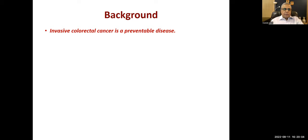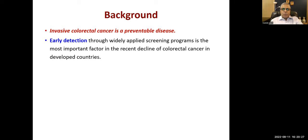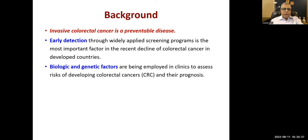Invasive colorectal cancer is a preventable disease. Screening is recommended - one test is occult blood in stools, which detects blood that cannot be seen. Early detection through widely applied screening programs is the most important factor in the recent decline of colorectal cancer. Biologic and genetic factors are being employed to assess risk. For example, familial adenomatous polyposis carries almost 100% chance of transforming to cancer.